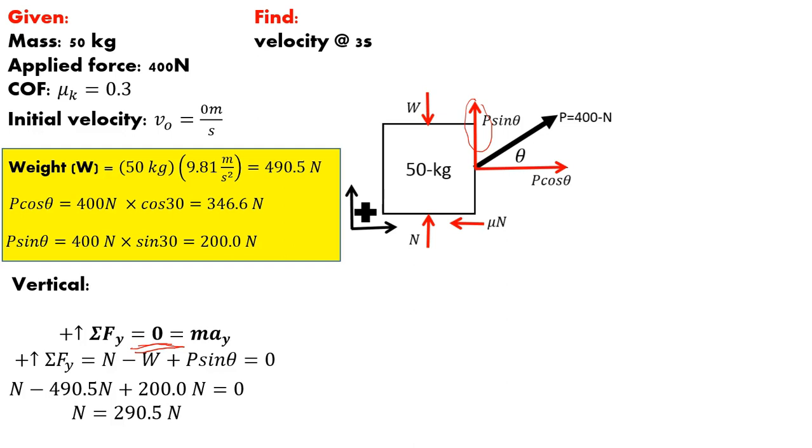Okay, so now we've got a normal force. And if you remember from the last video, this ties in with the horizontal sum of forces because of that friction, which is the coefficient of friction times the normal force. So we've got that one unknown that's going to help us solve the next set of problems.